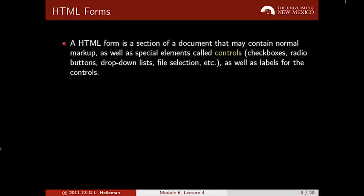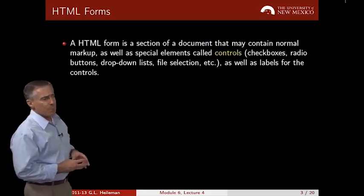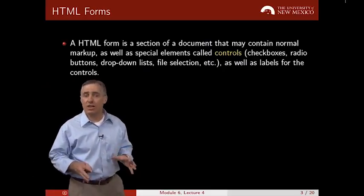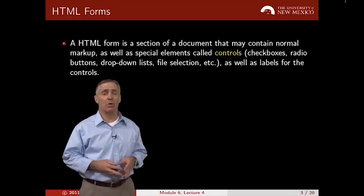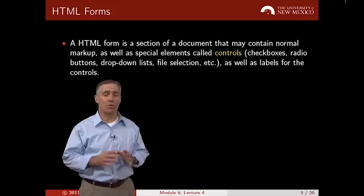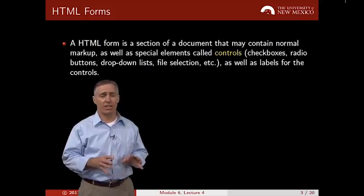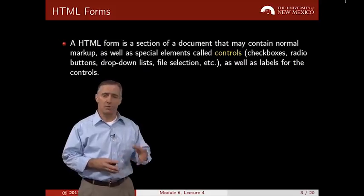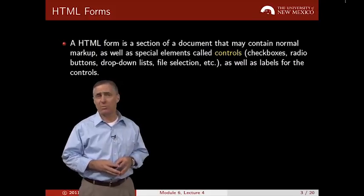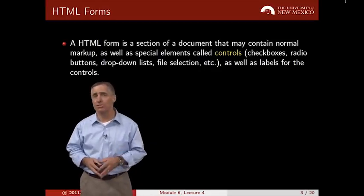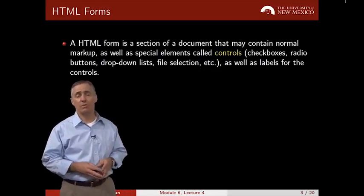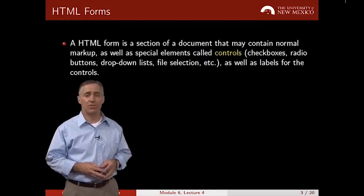An HTML form is a section of a document that can contain normal HTML markup as well as something called controls. We'll cover some of the various controls later in this lecture, but you've probably seen some of these controls as you've interacted with web pages — for example, checkboxes, radio buttons, drop-down lists, uploading files, things like that.